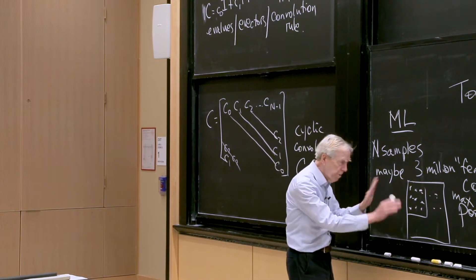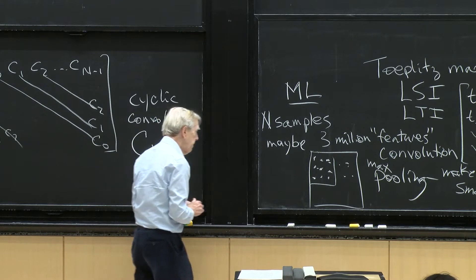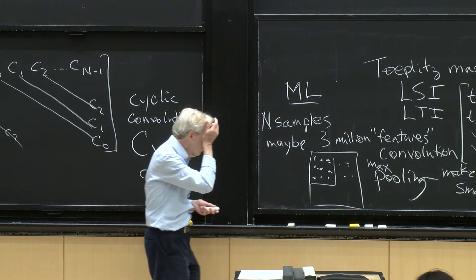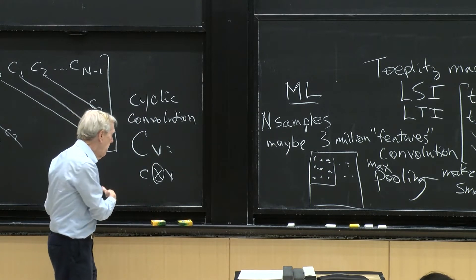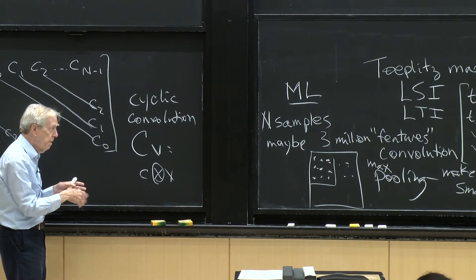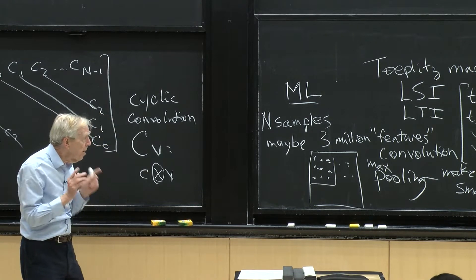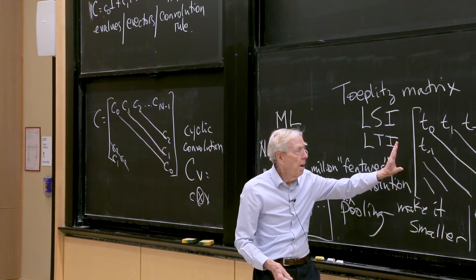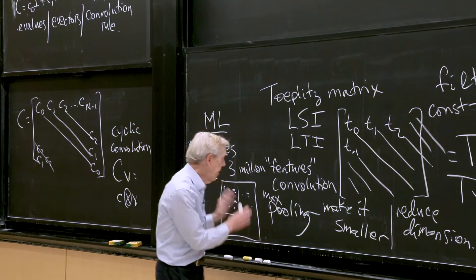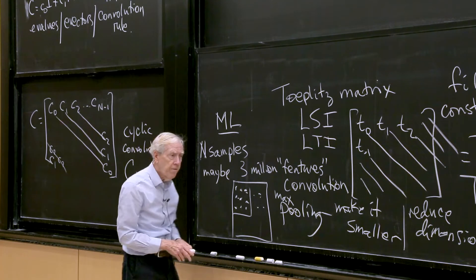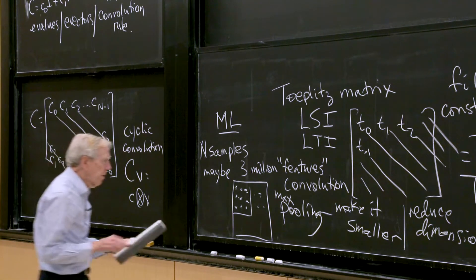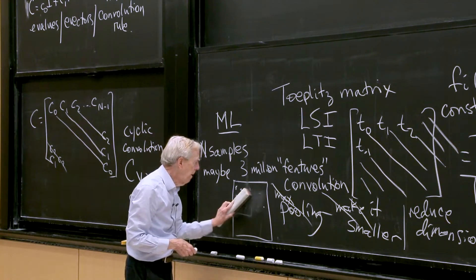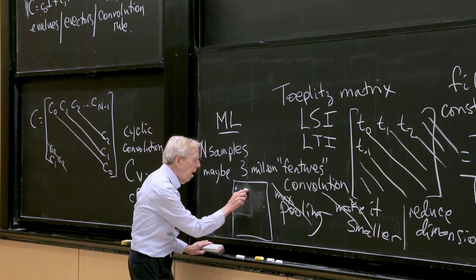Where do circulants, or convolution matrices, or Toeplitz matrices, or filters come into it? Forget about the max pooling — suppose that's happened, and I still have a very big system with n² pixels and n² features for each sample. I want to operate on that by matrices, choose the weights to bring out the important points. On an image like that, I'll use a convolution — the same operation happening at each point.